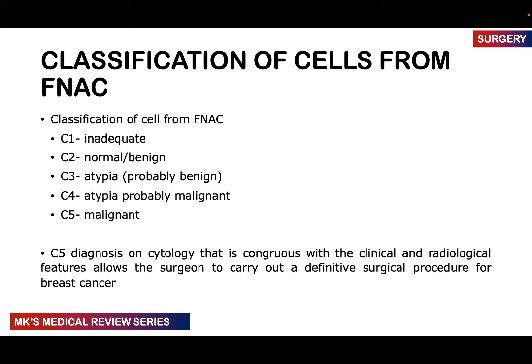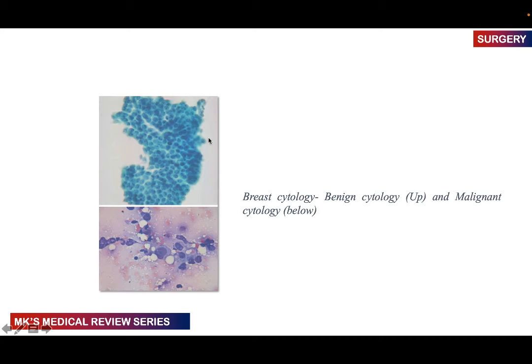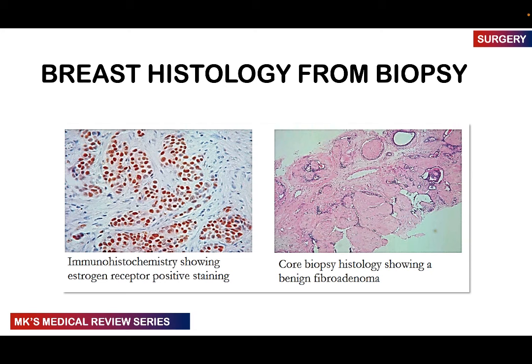FNA cytology is classified as: C1 — inadequate; C2 — normal or benign; C3 — atypia, probably benign; C4 — atypia, probably malignant; C5 — malignant. A C5 diagnosis should correlate with clinical and radiological features, allowing the surgeon to carry out definitive surgical management. Benign cells appear nice, well-stained, and well-aligned; malignant cells are differentiated, may show vacuoles, and are not uniform in size. Immunohistochemistry can show estrogen receptor positivity on breast tissue.